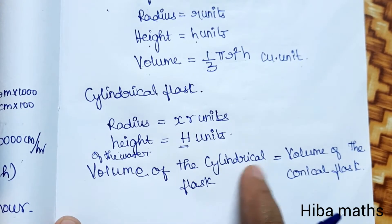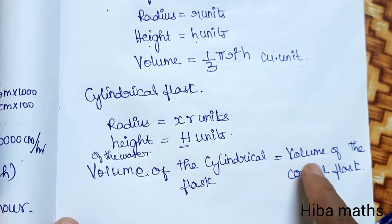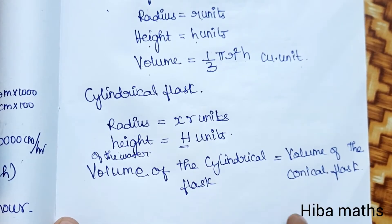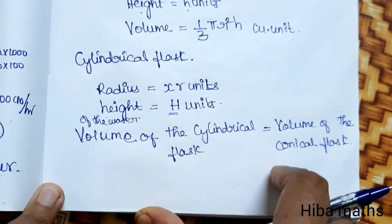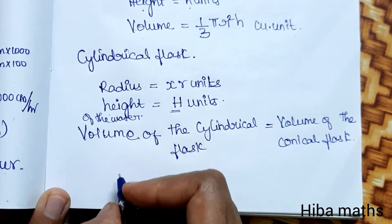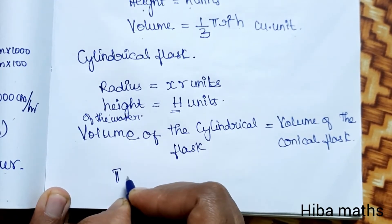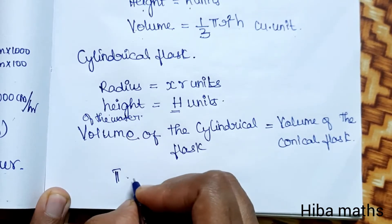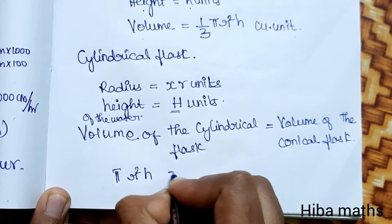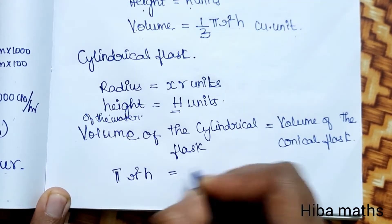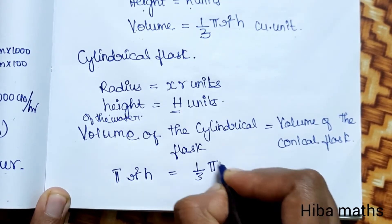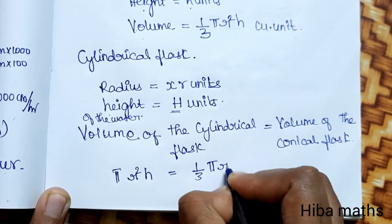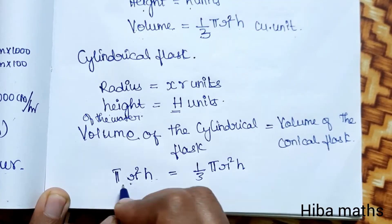Volume of cylindrical flask is equal to volume of conical flask. Volume of cylinder formula: pi r square h. That is equal to volume of conical flask: 1 by 3 pi r square h.